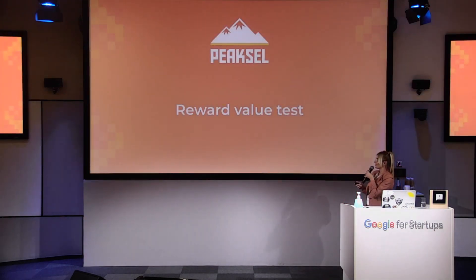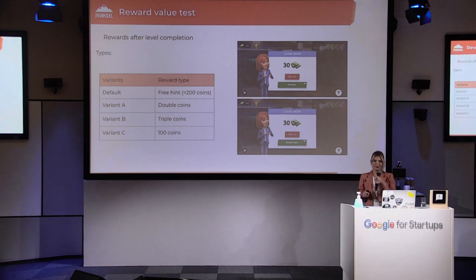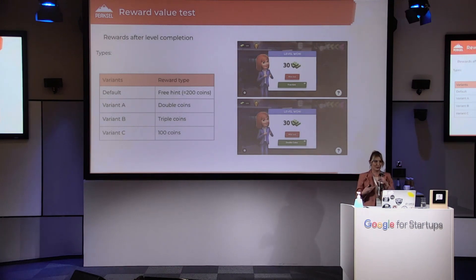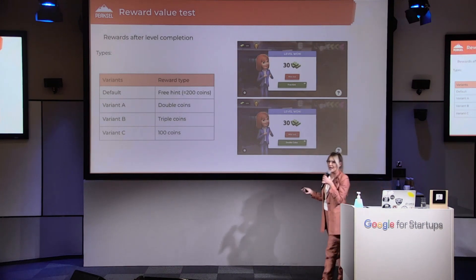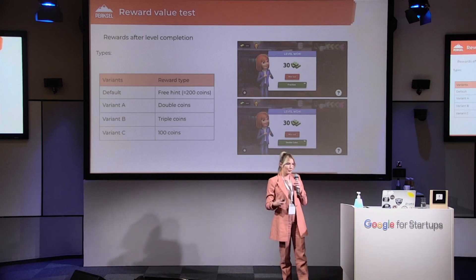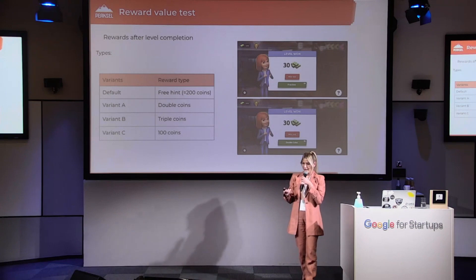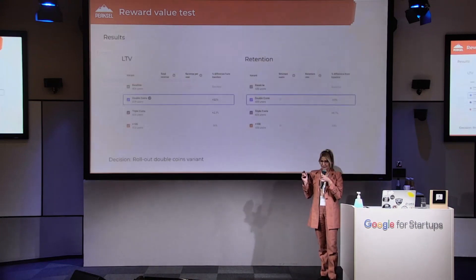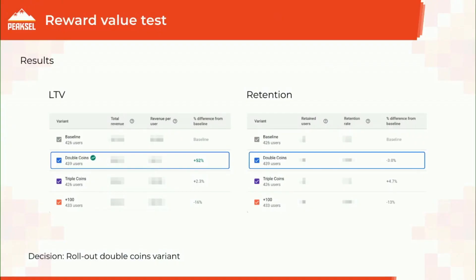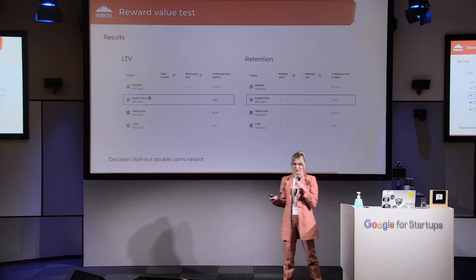The last test for today is a reward value test. We were testing different rewards after level completion. The default variant is a free hint, which is equal to 200 coins, and we tested it against double coins, triple coins, and 100 coins. When we rewarded users with double coins, the LTV was better by 52% and retention was almost the same. We made the decision to roll out the double coins variant to all users.